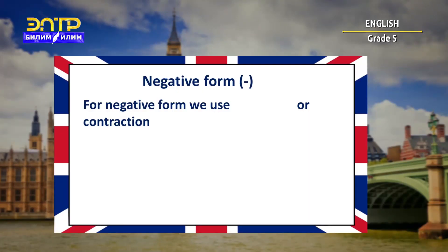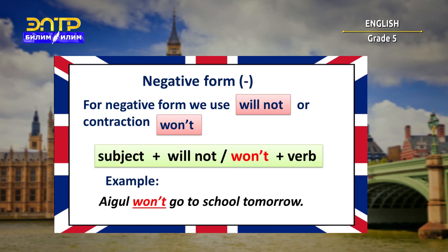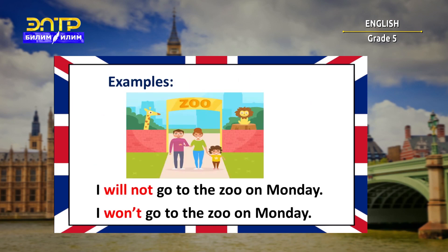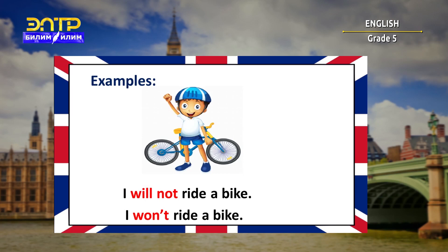Now let's speak about negative form. For negative form, we use will not or the contraction won't. For example: I won't go to school tomorrow. I will not go to the zoo on Monday — I won't go to the zoo on Monday. They will not go to the cinema tomorrow — they won't go to the cinema tomorrow. I will not ride a bike — I won't ride a bike.